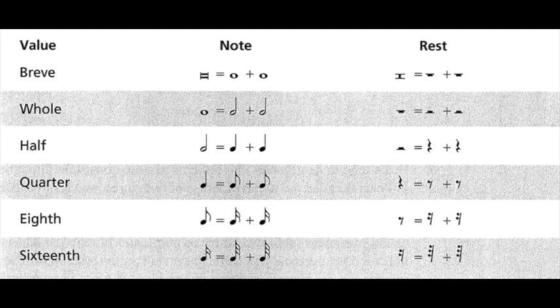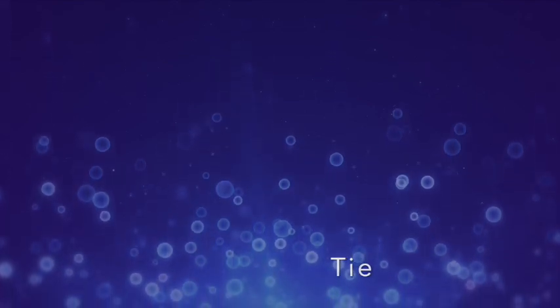Durations other than these must be indicated through the use of ties, dots, or other symbols. A tie is a curved line that connects two notes of the same pitch, creating a new duration that is equal to their sum. A dot always adds to the duration one-half the value of the note, rest, or dot that precedes it. For example, a dotted quarter note is equal to a quarter note tied to an eighth note.